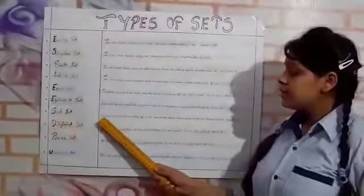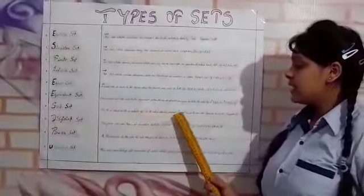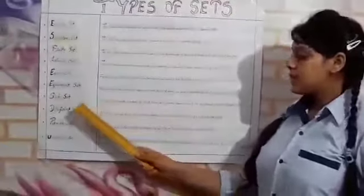Subset: Set B is said to be a subset of set A when all the elements present in set B are also present in set A, and the symbol of subset is ⊆.